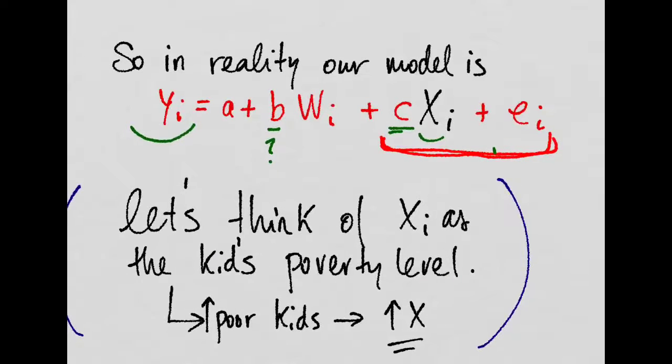So to simplify things, let's think of this X as the kid's poverty level. And the poorer the kid, the higher the X.